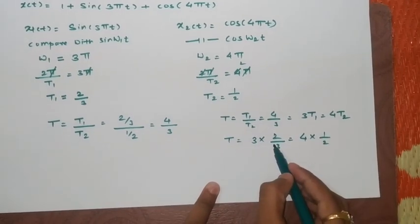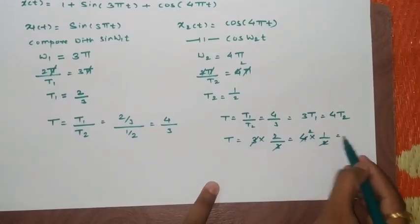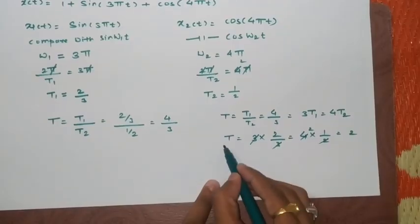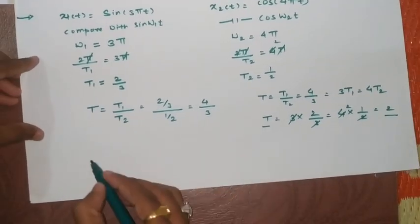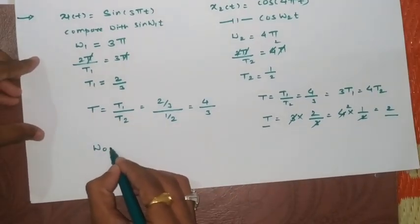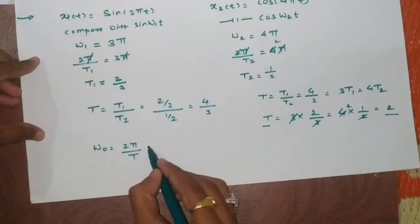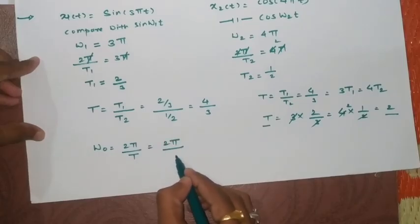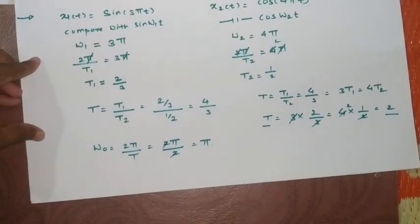So in both the cases this 3 will get cancelled, this 2 and 4, our answer will be 2. That means the overall fundamental period becomes 2 seconds. If it is there now I can find ω0 equals 2π/T which is 2π by 2, this will get cancelled and our fundamental frequency is now π.